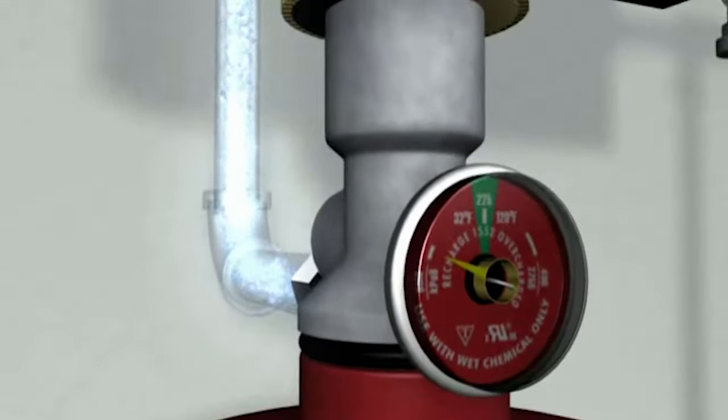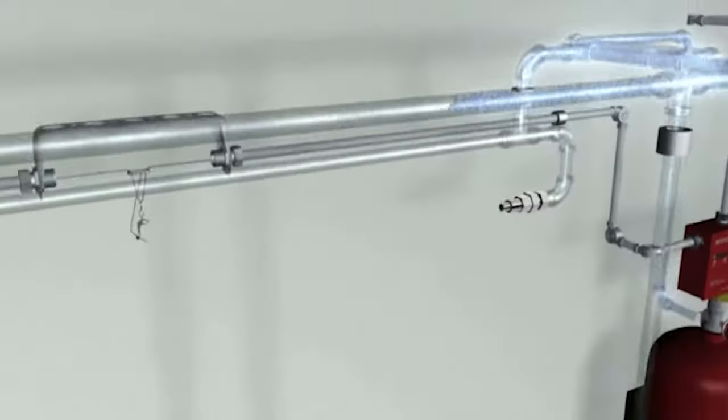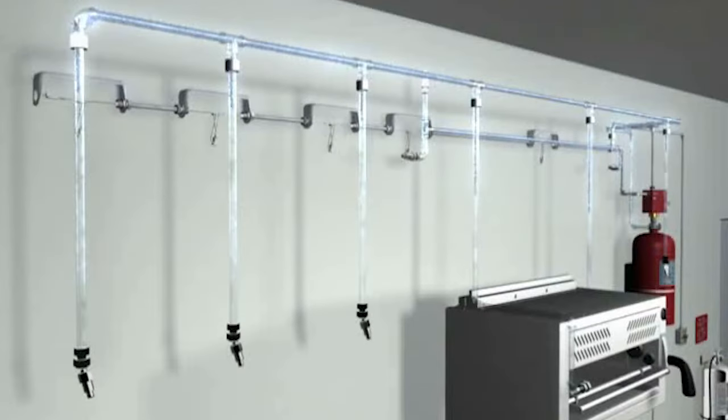The cartridge pressure opens the agent tank valve, allowing the wet chemical agent to flow freely throughout the piping network.